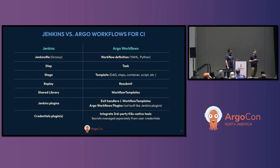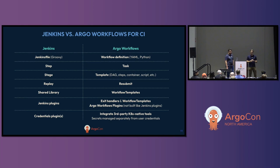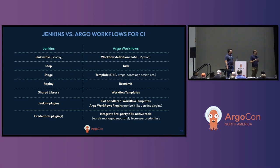Before we dive into an example showing how a Jenkins pipeline maps to an Argo workflows pipeline, let's call out a few different concepts. The Jenkins file maps to the Argo workflows definition in either YAML or Python using one of the SDKs, like the Hera workflows SDK. A step maps to a task or step in Argo. A stage in Jenkins maps to a template in Argo — most popular would be the DAG template, but also a steps template that declares a sequence of linear steps, or even a script template where you can pass a quick testing script in Python to be run as part of a step.